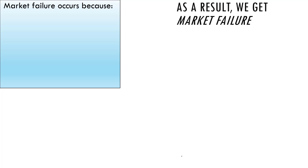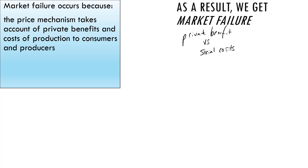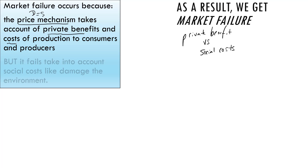Let's think about this — private benefit versus social costs. Market failure is a situation where the price mechanism, where demand equals supply, takes account of private benefits and costs of production to consumers and producers, but it doesn't take into account social costs like damage to the environment. So the market is failing because it accounts for the benefits consumers get and what it costs producers to make, but it doesn't take into account what happens to the environment.